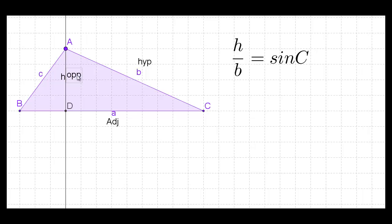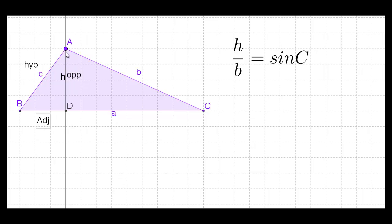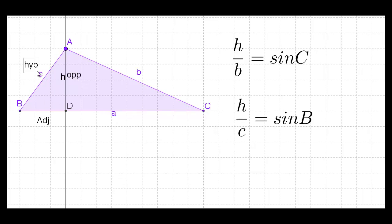Now let's look at the triangle on the left. The hypotenuse is now side c, and the opposite side is that perpendicular h that we've created. Now we have a new relationship that's true of the left-hand triangle: h over c is equal to the sine of angle B.